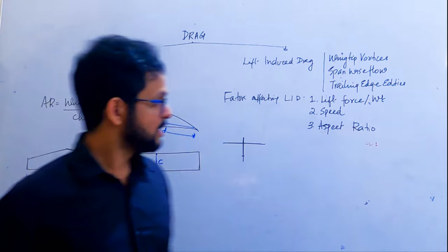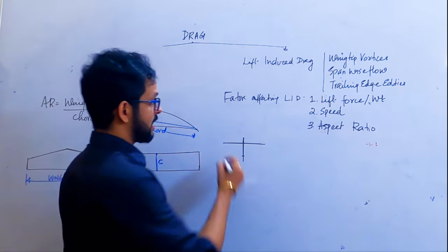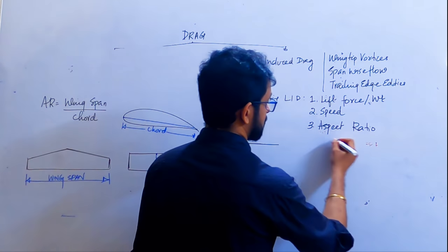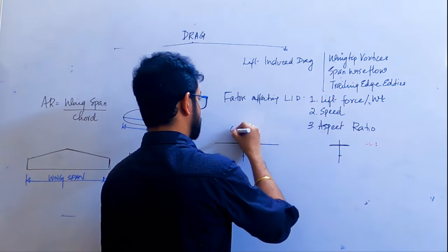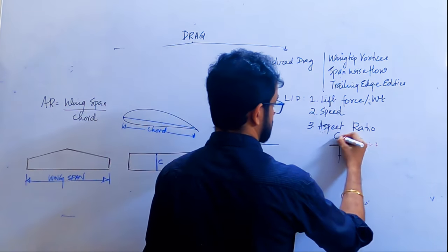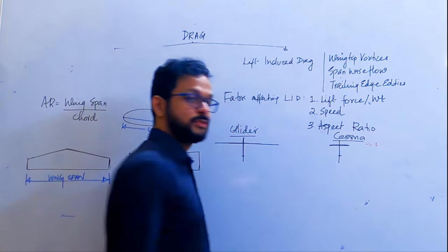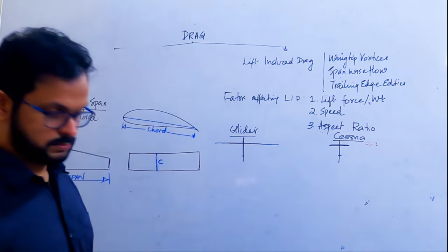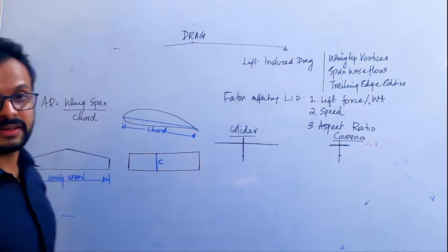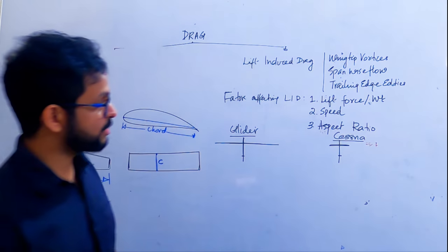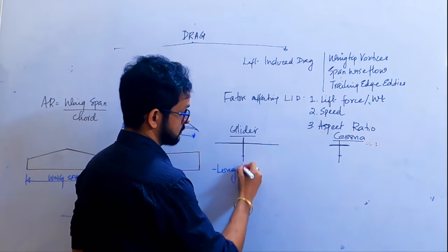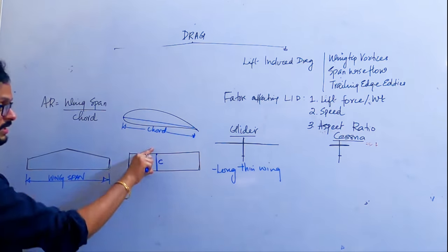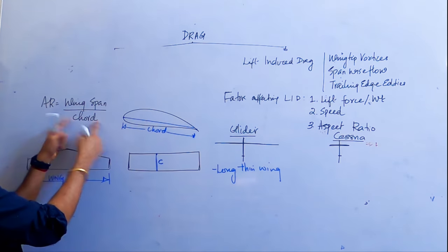Let's look at two different aircraft to understand aspect ratio. Gliders have very long wingspans. Now compare a glider to a Cessna. Which of these has a greater aspect ratio? Gliders — they have a longer wingspan and lesser wing chord. The glider has a long, thin wing.